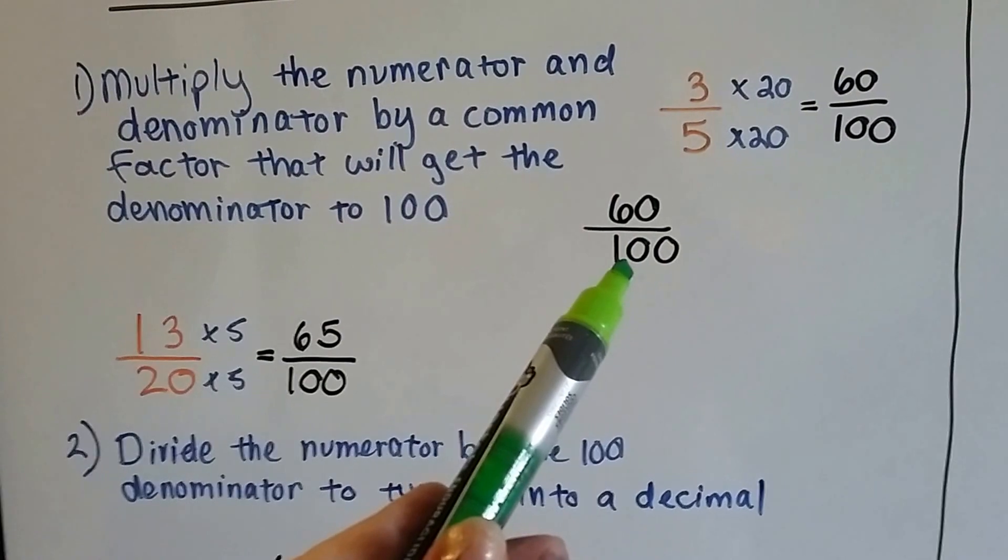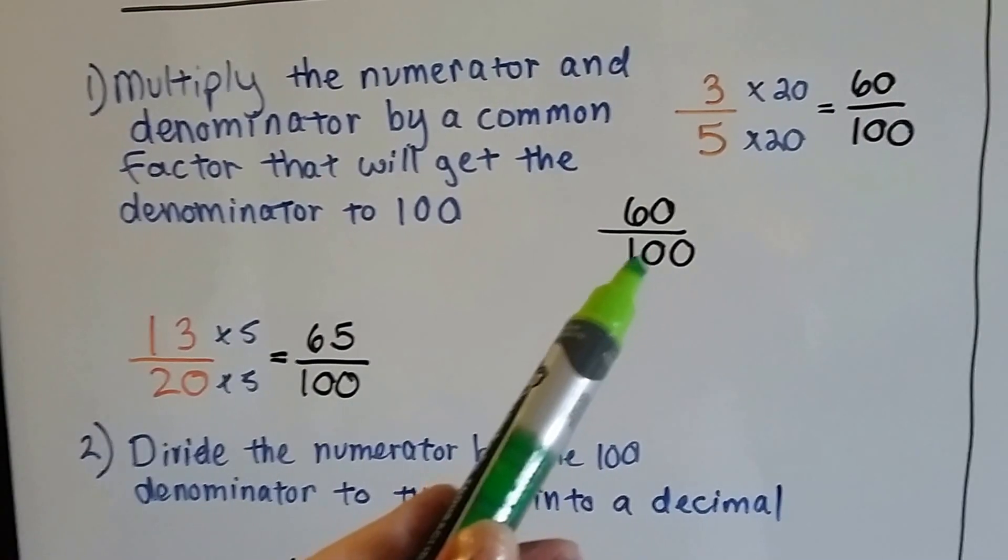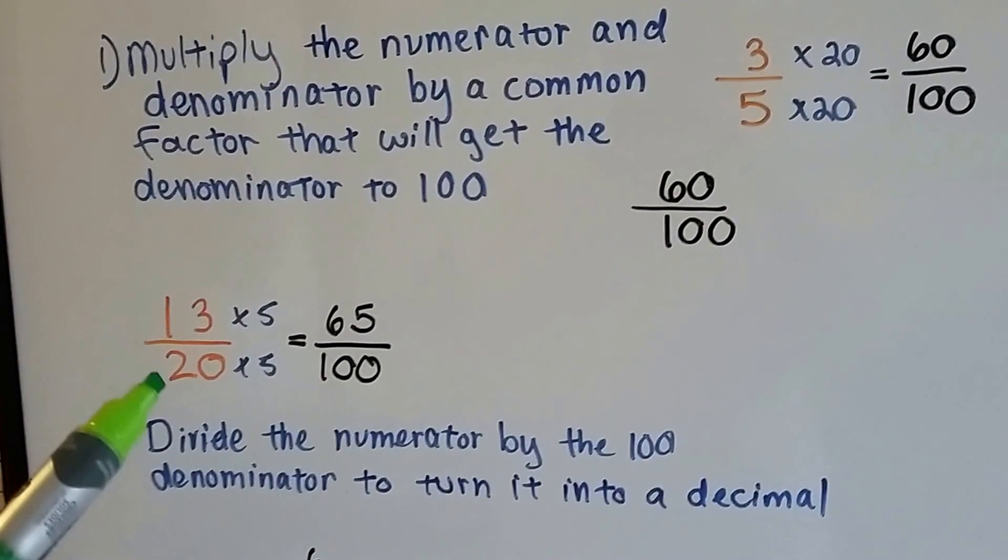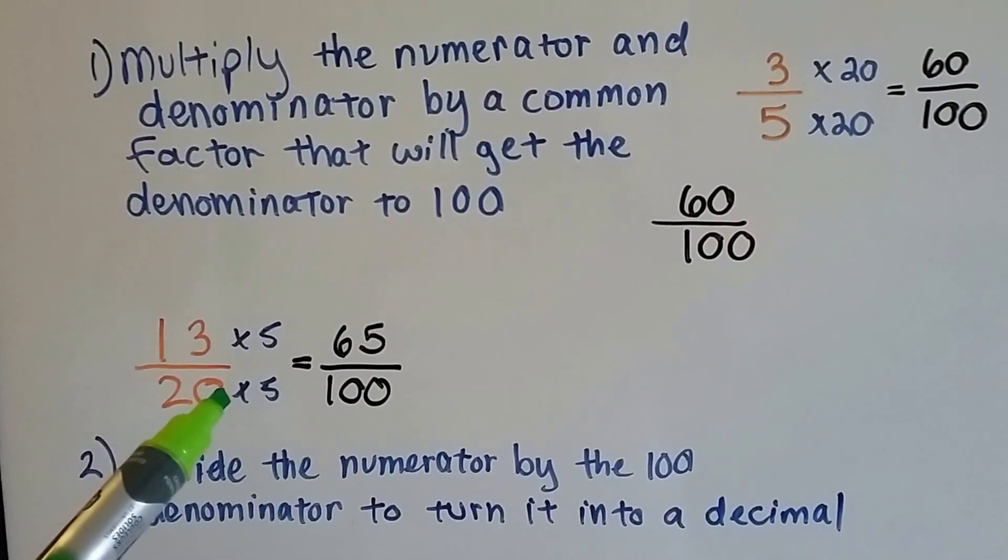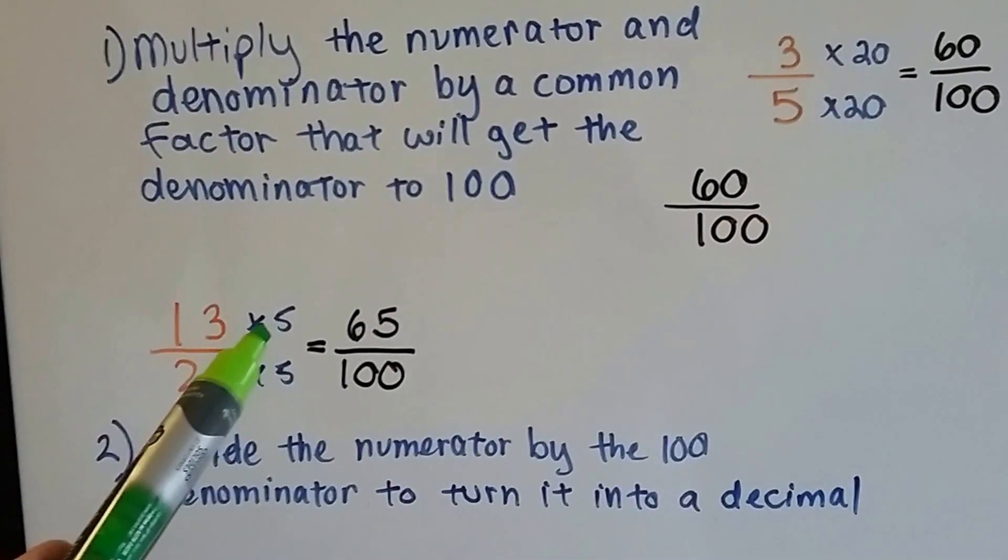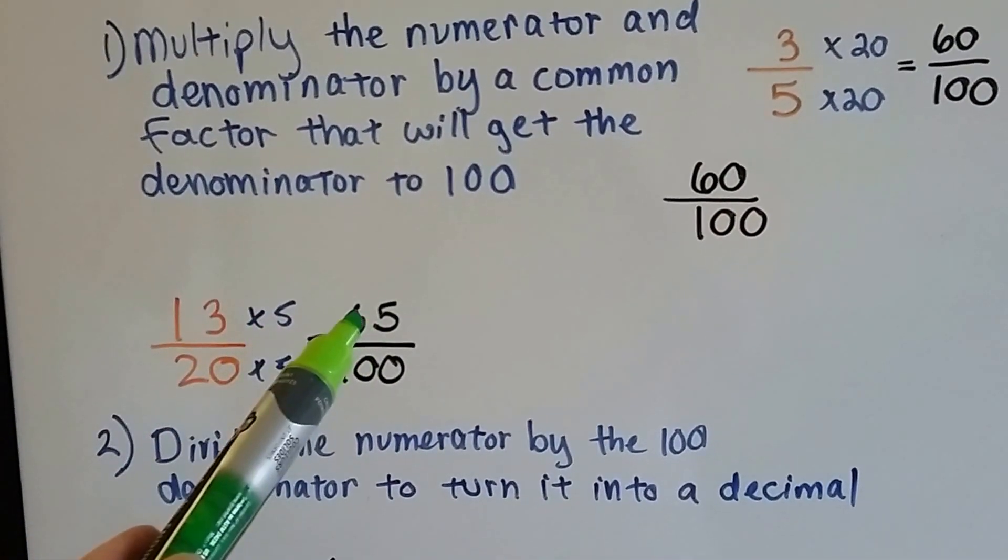Now we've got a fraction that is based on 100. We need that. If we had 13 twentieths, we know we can multiply the 20 times 5 to get it to 100. The 13 would get multiplied by 5 and it would be 65.